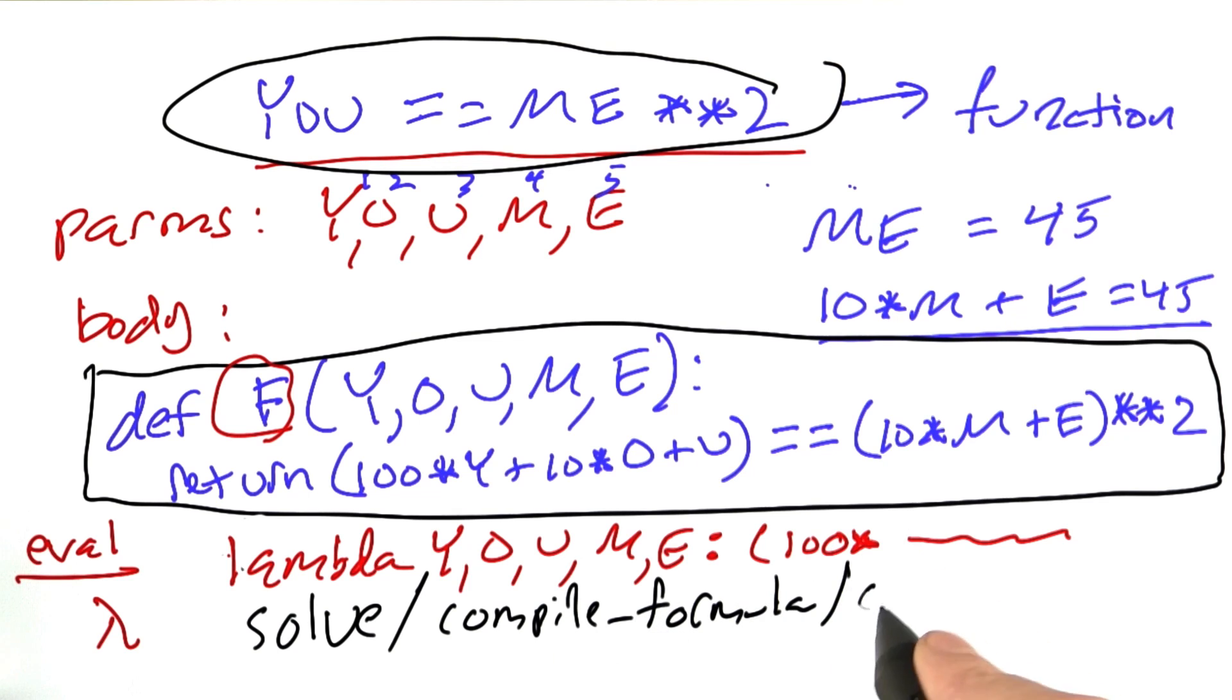As part of that, I want to have a function that I'm going to call compile_word. It's going to take a word like ME and compile that into something like 10*M plus E. You could have some variation on exactly how you want to express that.